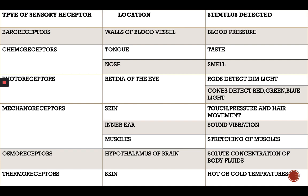Osmoreceptors are in the hypothalamus of the brain and are responsible for solute concentration of body fluids. The hypothalamus is a very important gland as it controls all the secreting glands. Thermoreceptors are located in the skin, and by these thermoreceptors we can feel whether it is hot or cold.